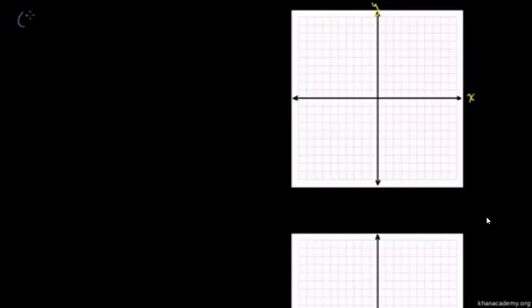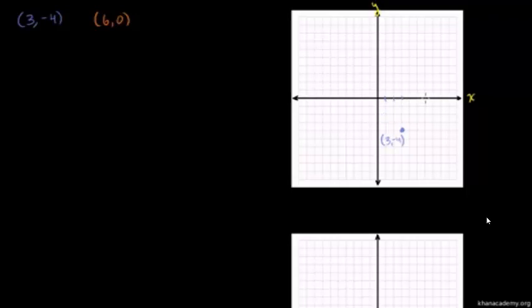Let's say I have the point — I'm doing a darker color so we can see it on the graph paper — the point (3, -4). So if I were to graph it, I'd go 1, 2, 3, and then down 4. That's (3, -4). And let's say I also have the point (6, 0). There's no movement in the y direction; we're just sitting on the x-axis. The y-coordinate is 0.